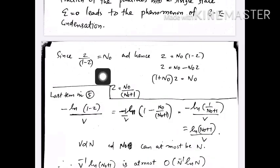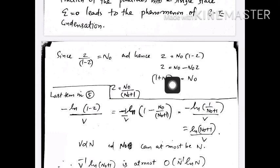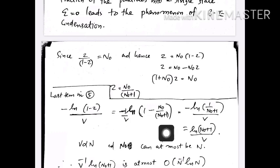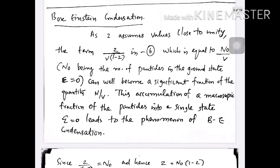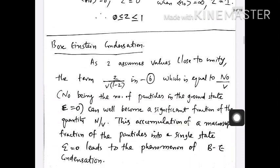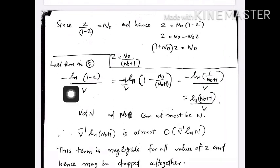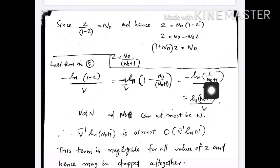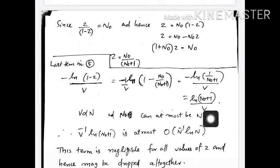Since z/(1 minus z) equals n₀, we can rearrange to write z equal to n₀/(n₀ + 1). Now we substitute this into equation 5. In equation 5, the term minus log(1 minus z)/V becomes, after substituting z = n₀/(n₀ + 1), equal to log(n₀ + 1)/V.